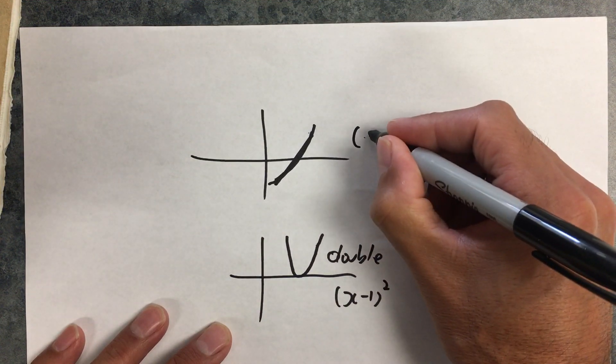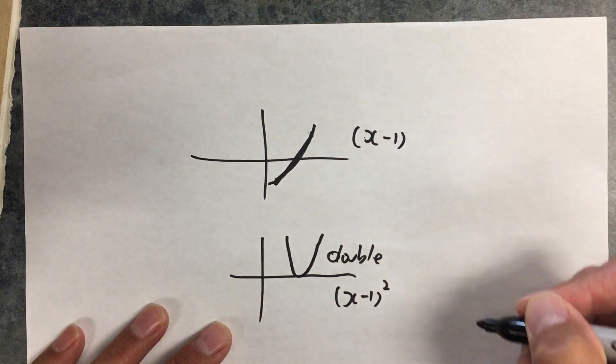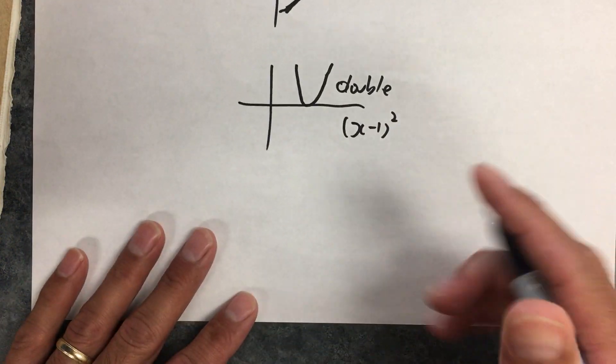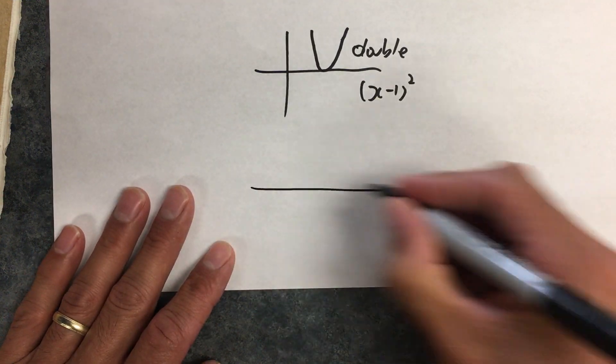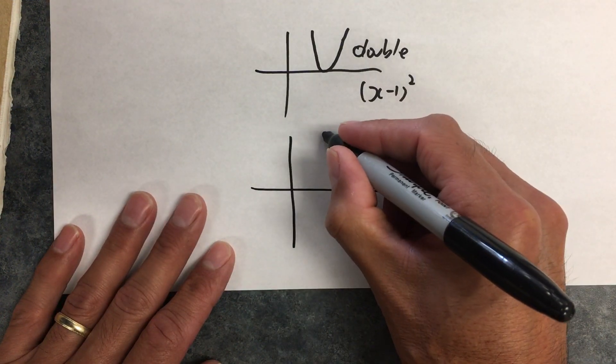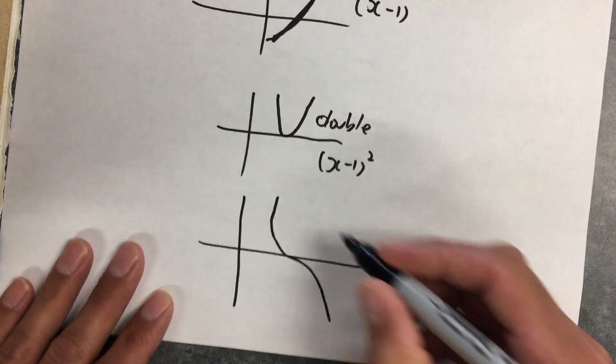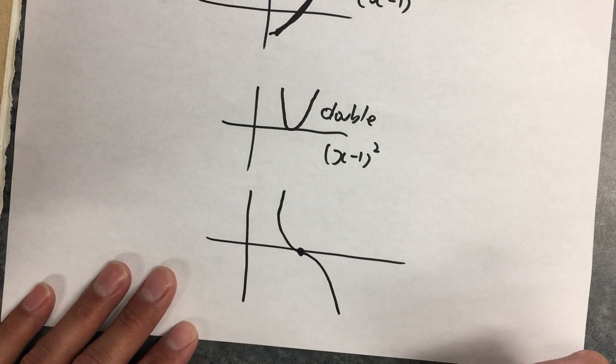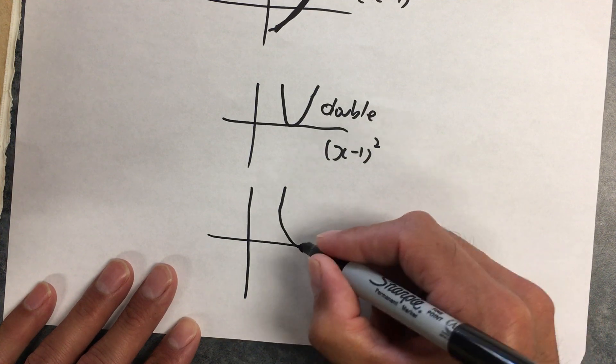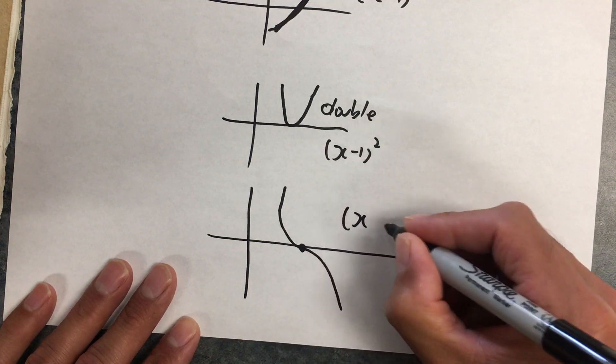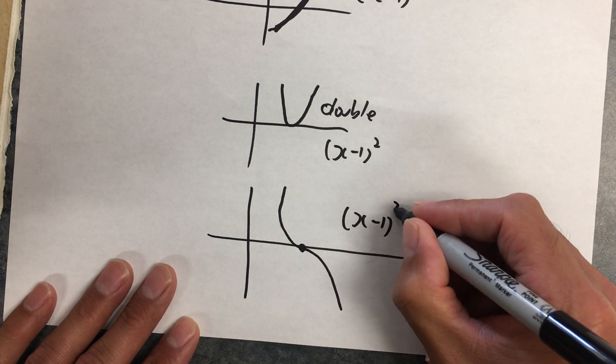And here, the factor would be (x - 1). If you get this shape where it curves one way and then curves the other, that is a triple root. So the factor based on that root would be (x - 1)³.